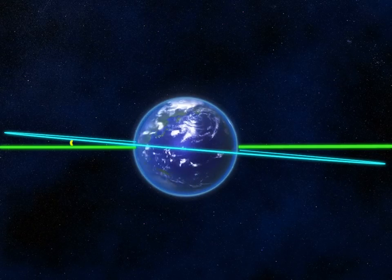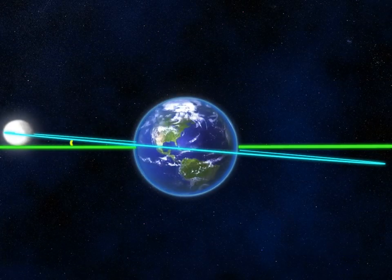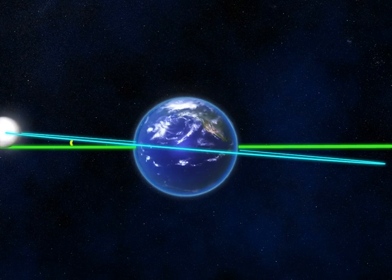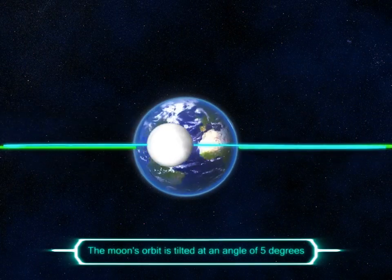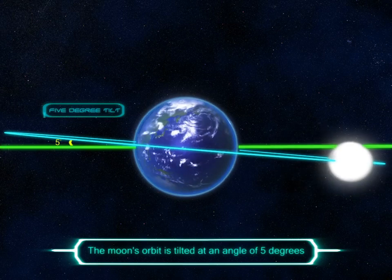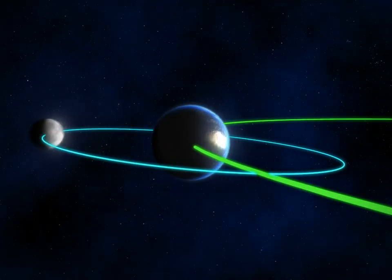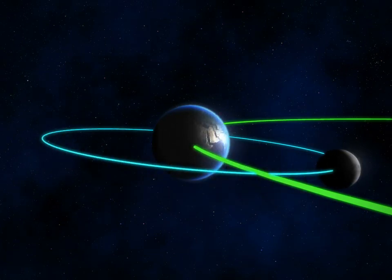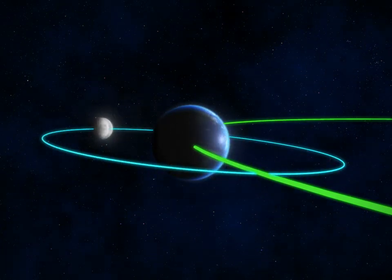Solar eclipses do not occur very often. This is primarily because the moon's orbit is tilted at an angle of five degrees. As the moon revolves around the earth, it is quite rare for the sun, the moon, and the earth to fall in a straight line.